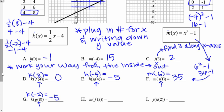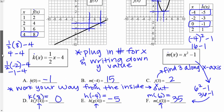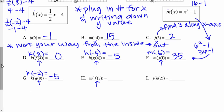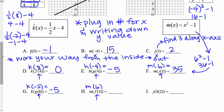For h, I'm first going to do the inside: f of three. f of three is six. Now I do m of six. I actually already did m of six — it was 36 minus one, which was 35.